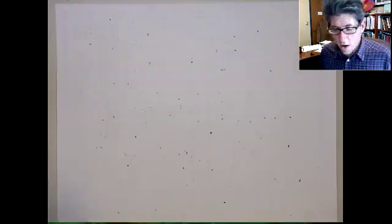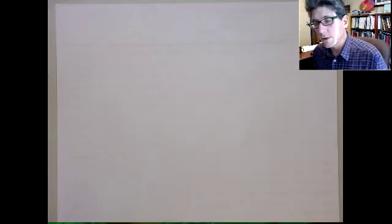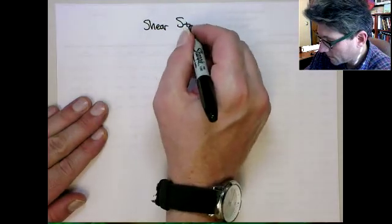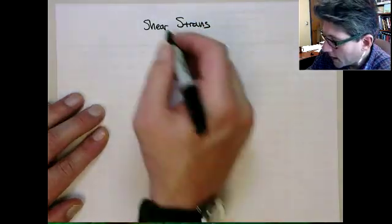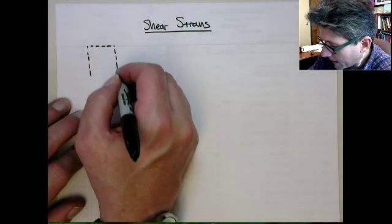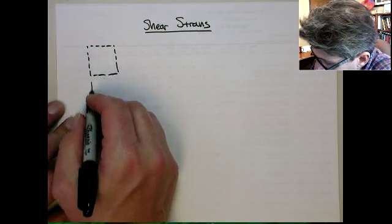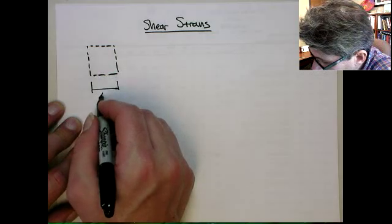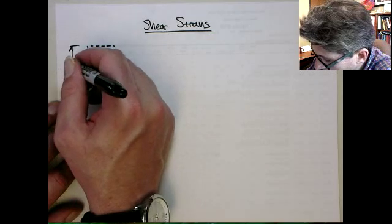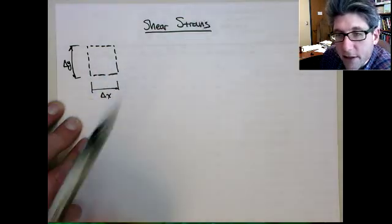Now I want to talk about the second type of deformation, or straining, which is shear. If you remember the picture with shear strains, what happens is we have an initial cube of material. This has to be defined in the plane, so this has a length of delta x and a height of delta y. This is really at a point, so we're going to take this in the limit as delta x and delta y go to zero.